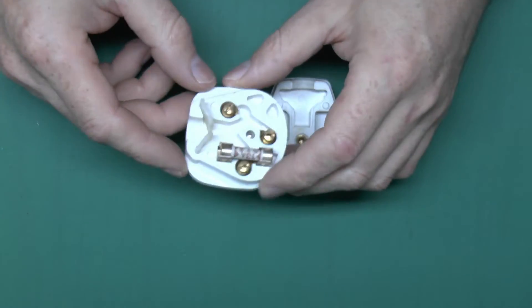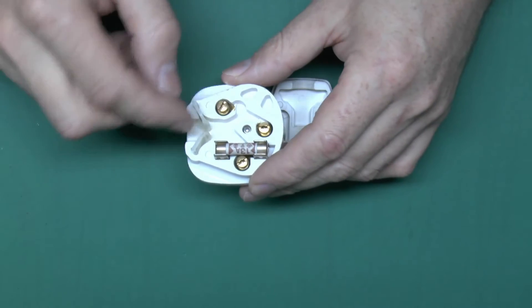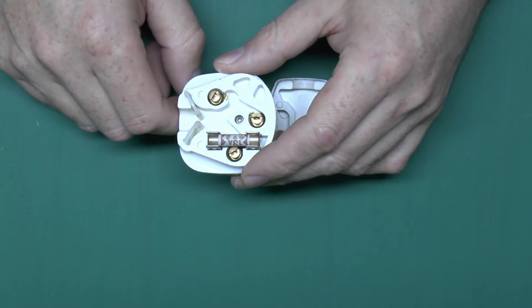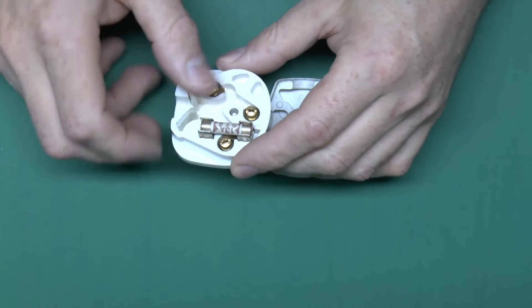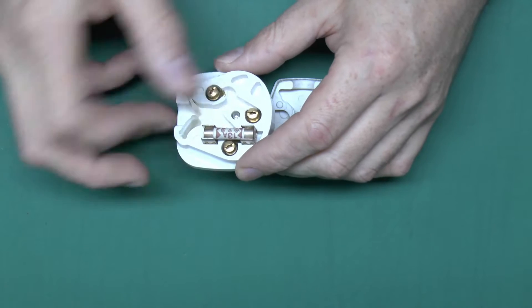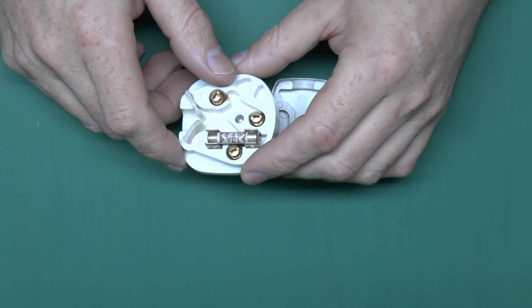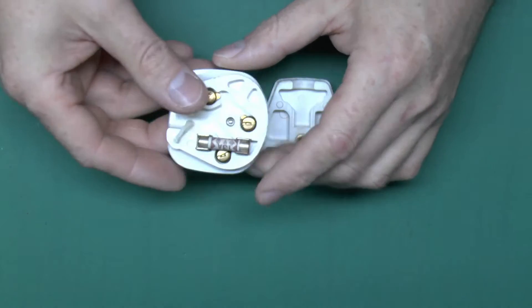And these typically would be plugged into a socket outlet on a 30 or 32 amp circuit. So clearly if you wanted to have flex without the fuse, the flex here would have to be rated to 32 amps or something, which would be a bit impractical because it would be far too large. So a fuse is genuine there, 13 amps being the maximum, various other ratings available, usually three or five, although there are others as well.